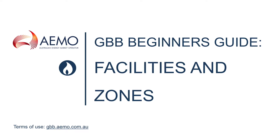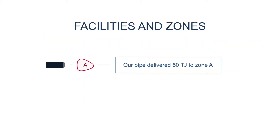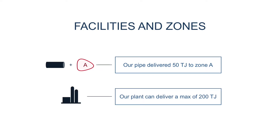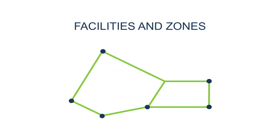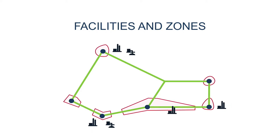Hello again, and welcome to part two of the beginner's guide to the bulletin board, where we take a look at the way data on the bulletin board is organized. All the specific data like gas flows, facility specifications, and so on, are reported according to facilities and zones. So in this video, we're looking at the way facilities and zones are defined on the bulletin board, and then how that flows on to some of the specific reports.